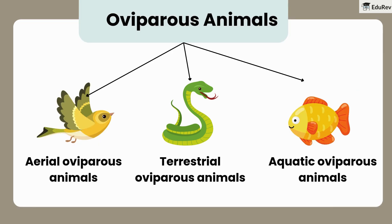We can group oviparous animals into three types based on where they live. There are aerial oviparous animals that fly in the air, terrestrial oviparous animals that live on land, and aquatic oviparous animals that live in water. Let's look at each type.